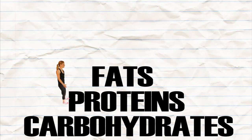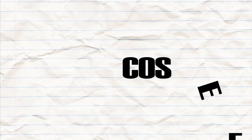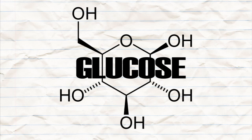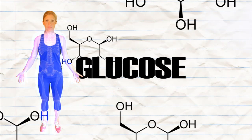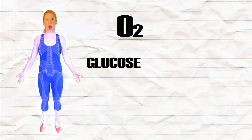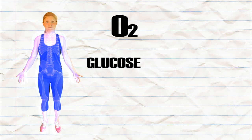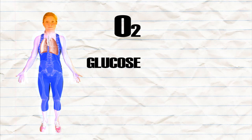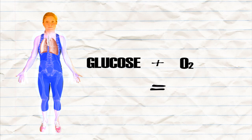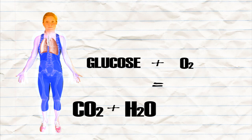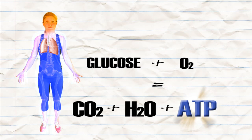When we do physical activity, these large molecules are first broken down to smaller molecules such as glucose, which are transported to the muscles. Oxygen, which is also needed in this reaction, is transported from the lungs to the muscle, where it reacts with the glucose producing carbon dioxide, water, and a small molecule called ATP — our body's energy currency.